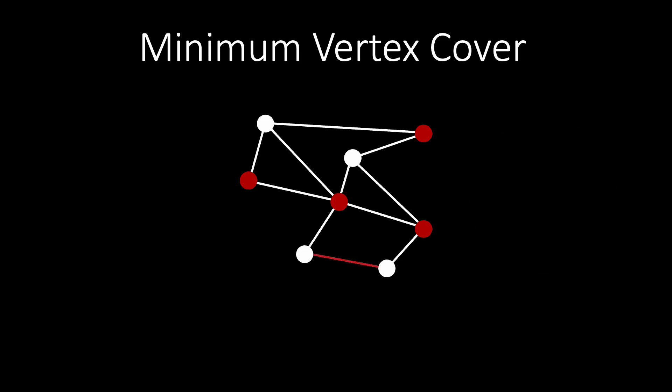You probably noticed that the edge at the very bottom of the graph is not incident to a vertex in the subset. Thus, the marked vertices do not form a vertex cover. We need to add one of the two endpoints to make it a valid vertex cover. In the minimum vertex cover problem, we have to find a smallest vertex cover of a graph.